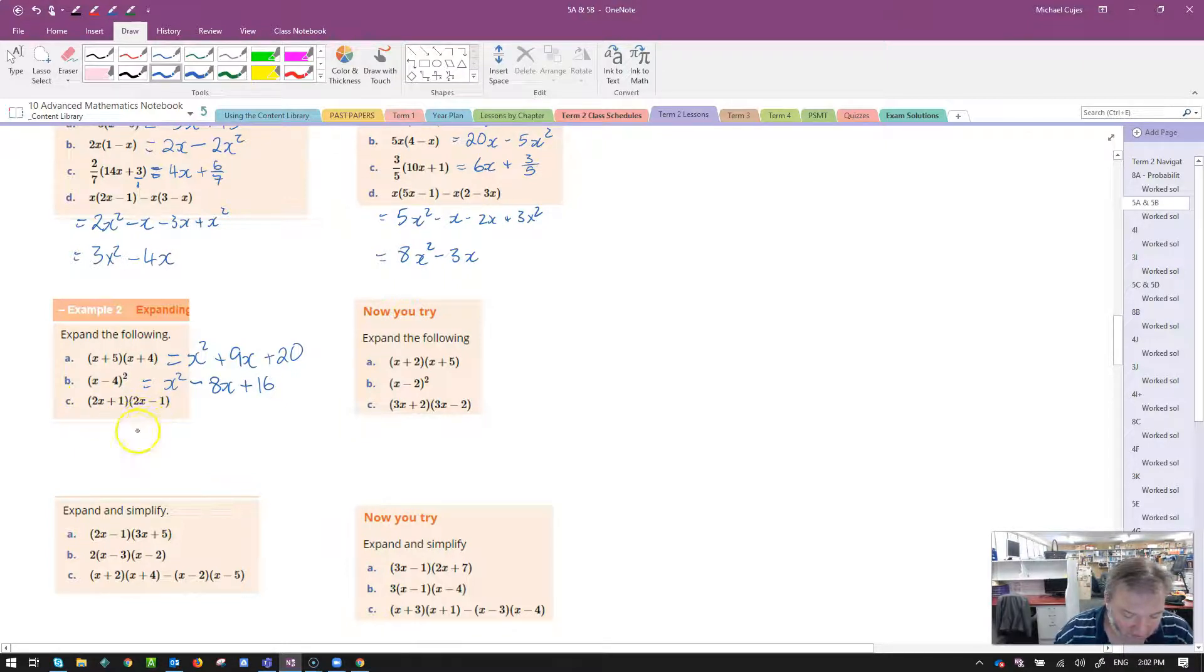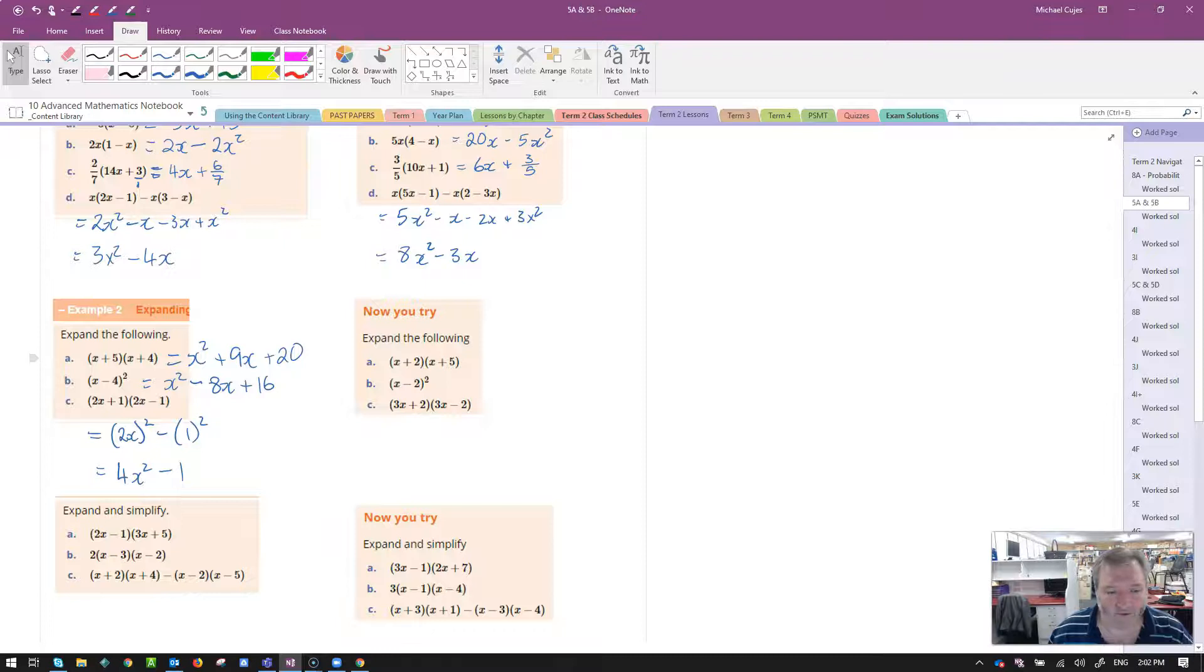Lucky last one here. Oh look, it's my favorite rule in math. 2x plus 1, 2x minus 1. That's the difference of two squares. Make sure that you're thinking about doing this correctly. 2x when I square it gives me 4x squared minus 1 squared is 1. You've got a chance to try the others again. Please make sure you do them first and then double check.